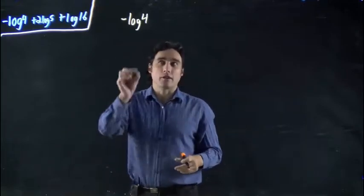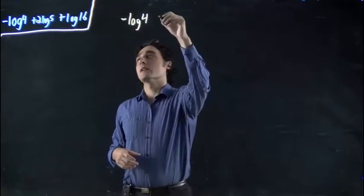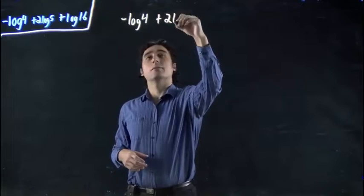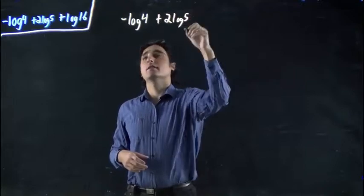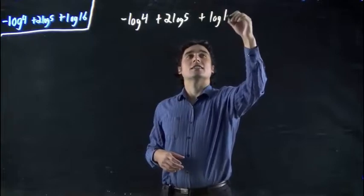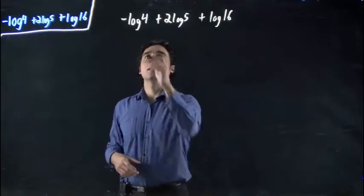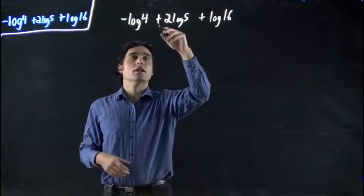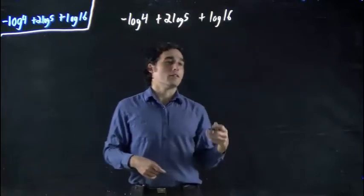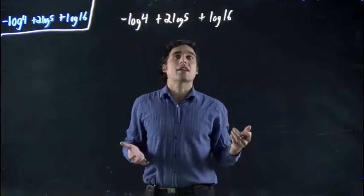It's just they don't bother writing the base 10 because it's assumed. So we have minus log 4 plus 2 times log 5 plus log of 16. And all of these are to the base 10 because we don't see a base. So minus log of 4 plus 2 times log of 5 plus log of 16. And we want to solve that. We want to figure out what this actually is.